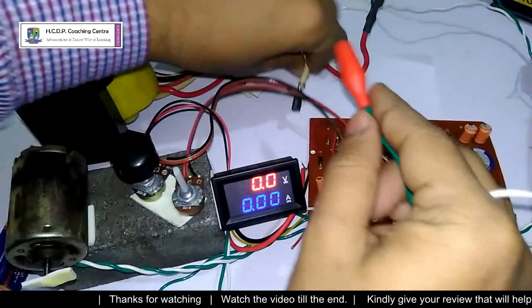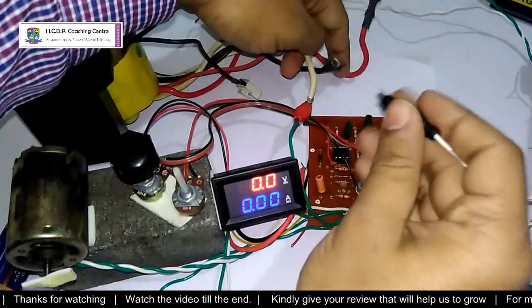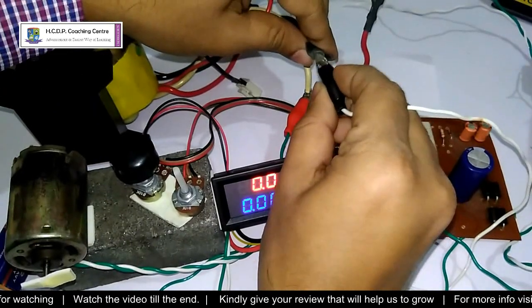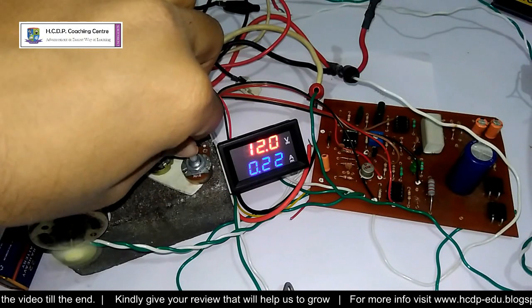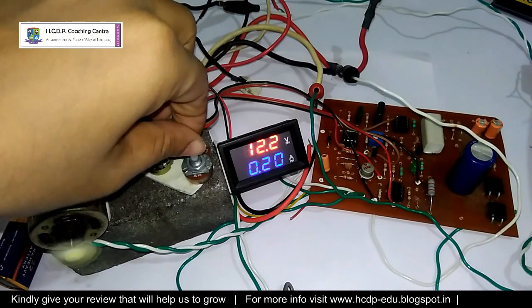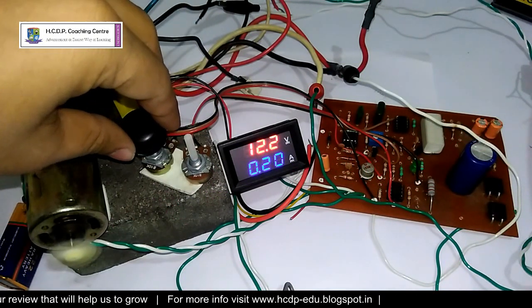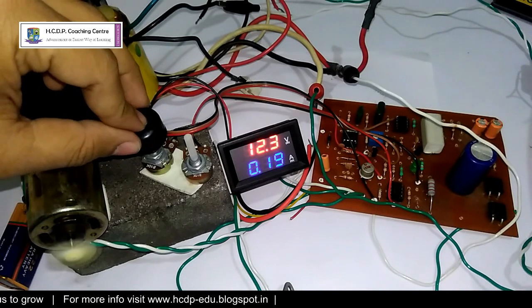After connecting all the components to the circuit, I connect the main power source of the circuit to the secondary windings of the transformer. Now I switched on the main power supply. As you can see, motor is now rotating, that means motor is now on. I change the volt and current level using the potentiometer and let's see what happens.